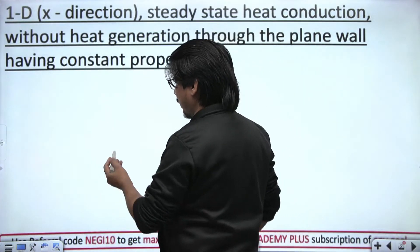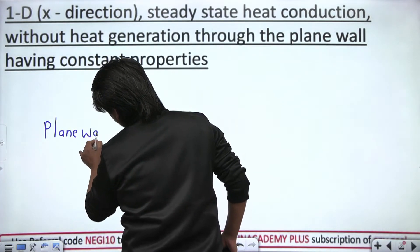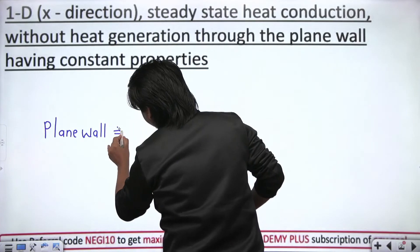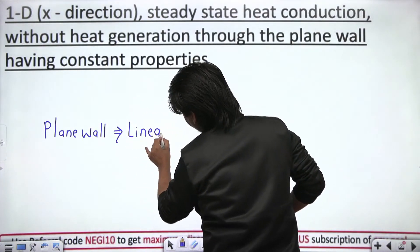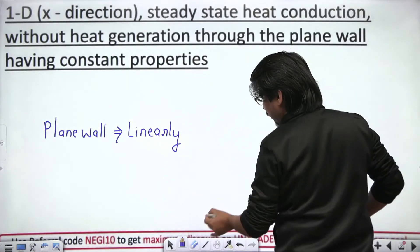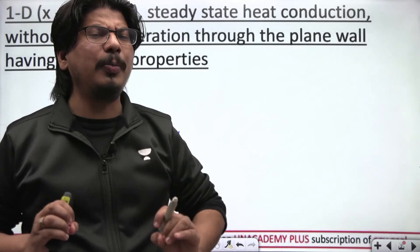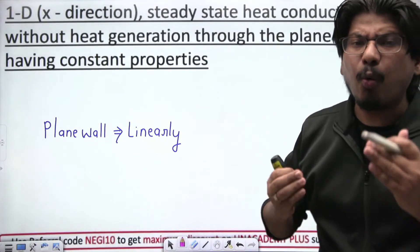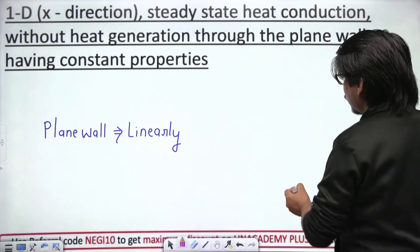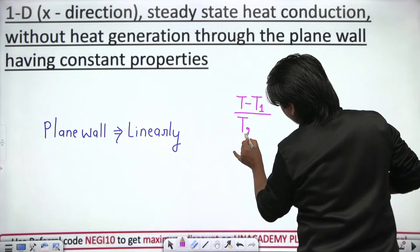What is the temperature distribution formula? It's very easy. For a plane wall, the temperature varies 100% linearly with the x-direction. Linearly means a straight line. Recall the equation of a straight line: (y − y1) / (y2 − y1) = (x − x1) / (x2 − x1). Similarly, replace y with T: (T − T1) / (T2 − T1) = ...